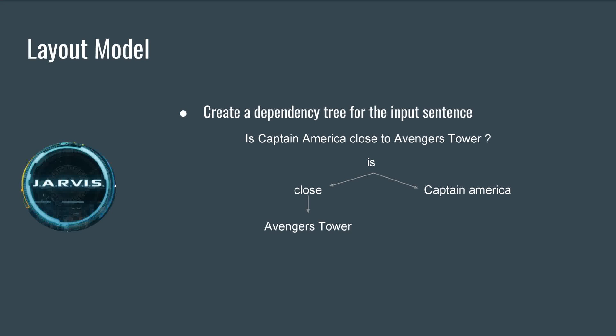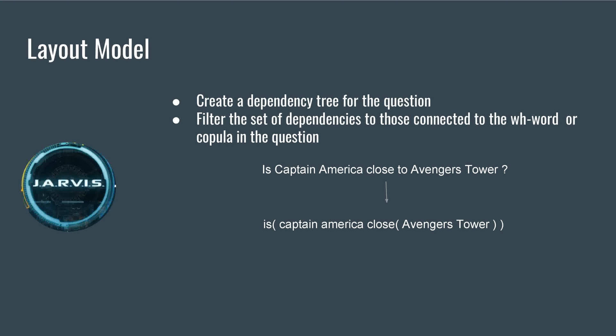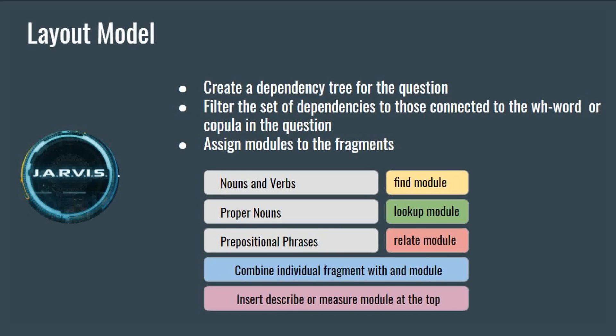Jarvis builds a layout by first parsing the input question to obtain a dependency representation. This helps in expressing grammatical relationships between parts of a sentence. Next, Jarvis collects all nouns, verbs, and prepositional phrases that are attached directly to a woe word or copula. This gives a simple symbolic form expressing the sentence's meaning. All nouns and verbs are mapped to the find module and proper nouns are mapped to the lookup module. All prepositional phrases are mapped to the relate module.